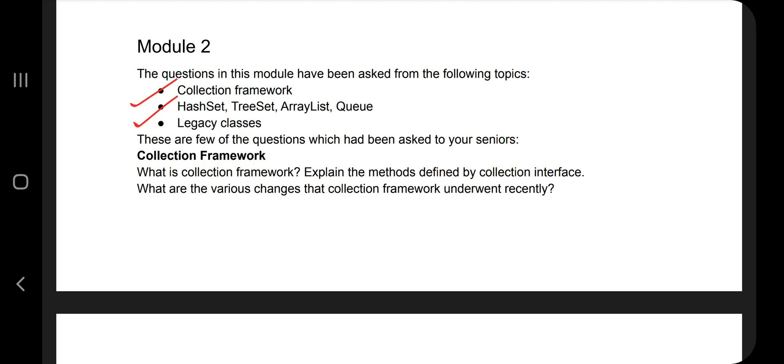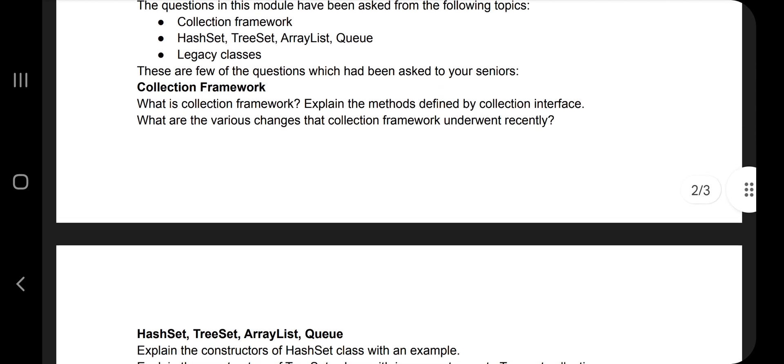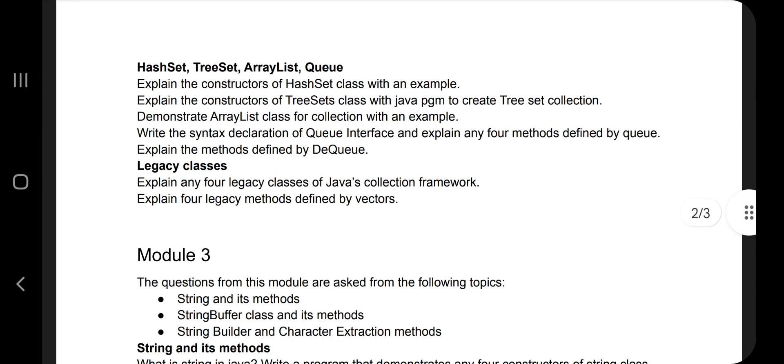Let's continue with Module 2. We have the questions from the Collection Framework - HashSet, TreeSet, ArrayList, and Queue, and legacy classes. Mainly these three topics have been much repeated. So if you start preparing, I suggest you to start from the HashSet and TreeSet, then go to Collection Framework, then cover rest of the topics. Few of the questions like what is the Collection Framework and the different changes it underwent through, and explain the constructor - this is the super important one. Explain the concept of HashSet and the TreeSet with examples.